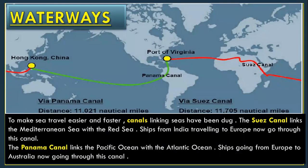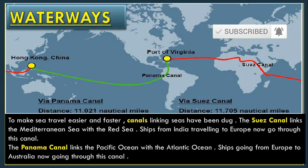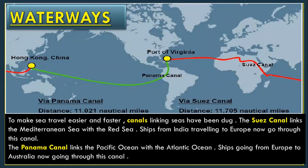Transport by ships is also much cheaper than road and air transport. To make sea travel easier and faster, canals linking seas have been dug. The Suez Canal links the Mediterranean Sea with the Red Sea. Ships from India traveling to Europe now go through this canal.